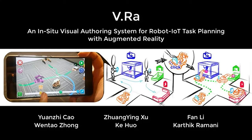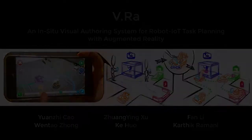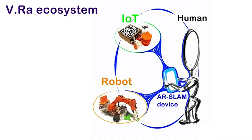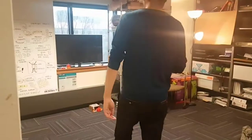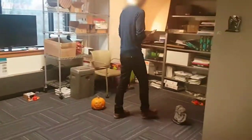We present Vira, an ecosystem designed for robot IoT task planning. In Vira, human, robot, and IoT are coherently connected together by a single AR SLAM device.